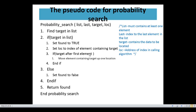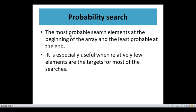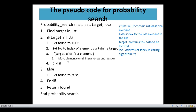If the target is after the first element, we need to move the element containing the target up by one location. Because the definition of probability search is that the most probable search element should be at the beginning, we are moving this element up. Then end if. Else, set found to false. Otherwise return found and end probability search.